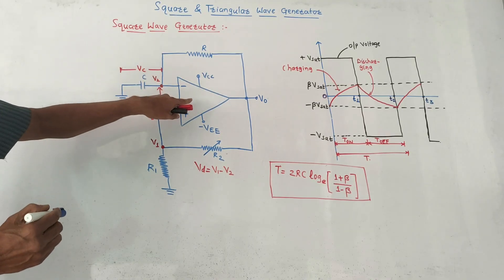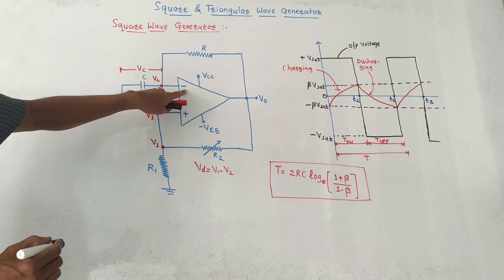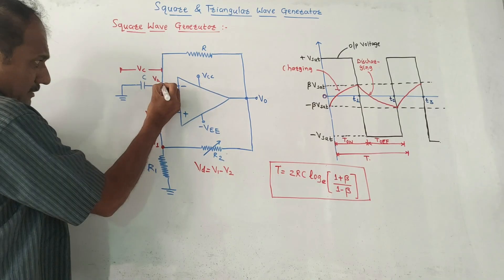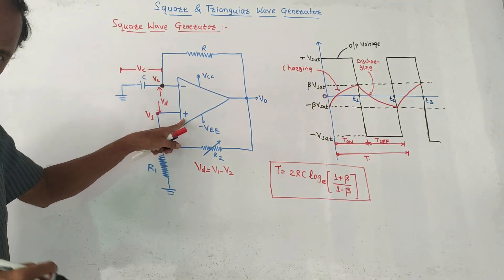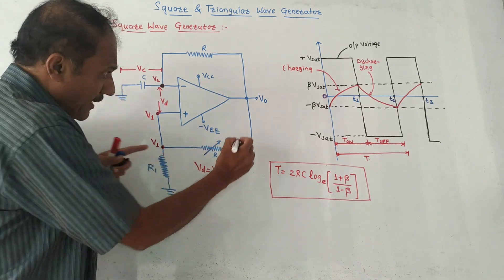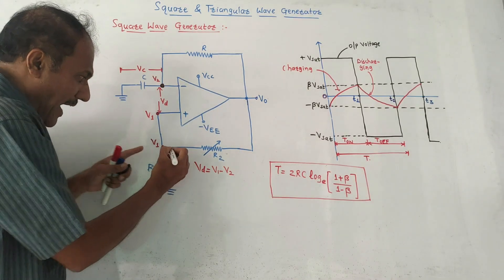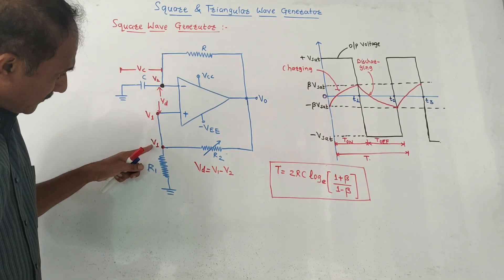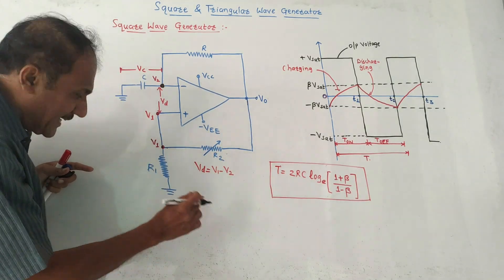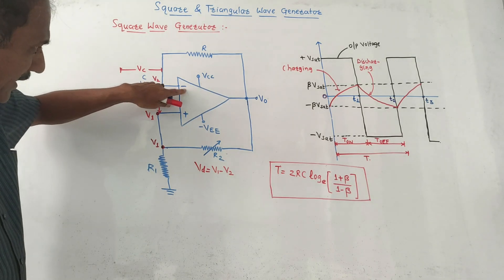This is the diagram used to generate the square wave signal. This is the capacitor C which is connected to the inverting terminal of the op-amp, and the voltage across the capacitor is VC. At the inverting terminal, this point's voltage is V2. This is the non-inverting terminal or positive terminal, and this voltage is V1. The output voltage V0 is taken back as a feedback connection, giving some voltage V1. This V1 will be proportional to V0, decided by resistance R1 and R2. Vd represents the difference voltage between negative and positive terminal.